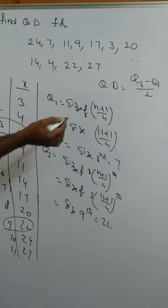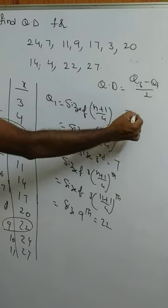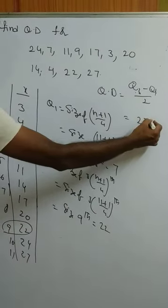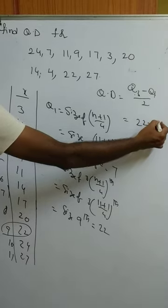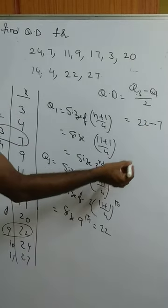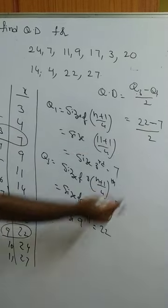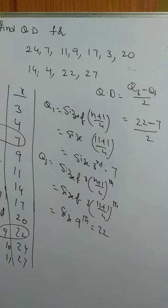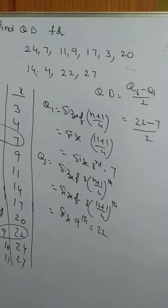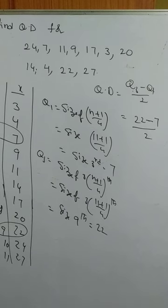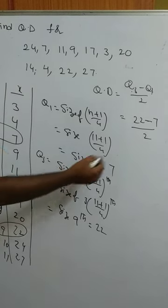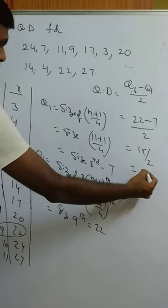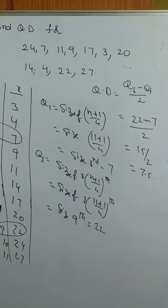The quartile deviation is equal to Q3 minus Q1 by 2. Q3 is 22 and Q1 is 7, so that is (22 − 7) / 2 = 15 / 2 = 7.5. Therefore, the quartile deviation is 7.5.